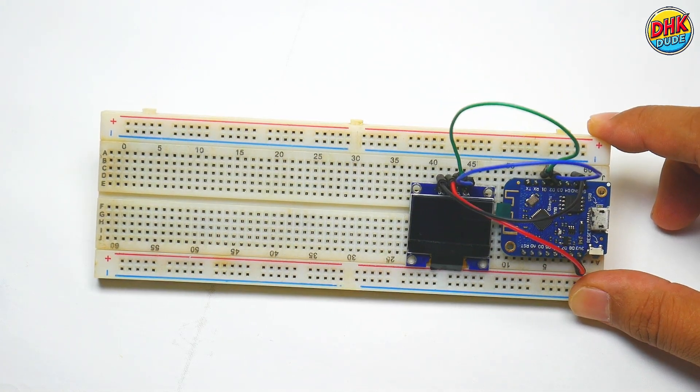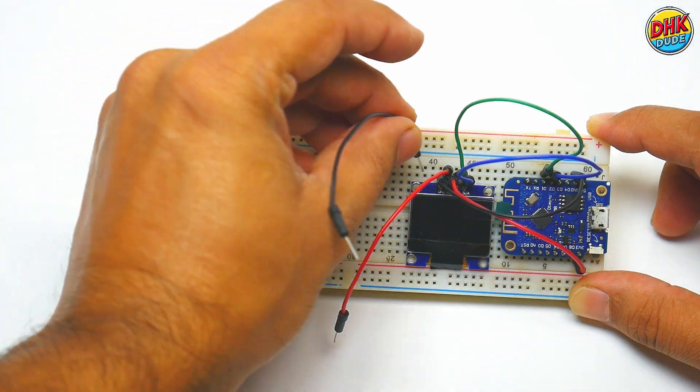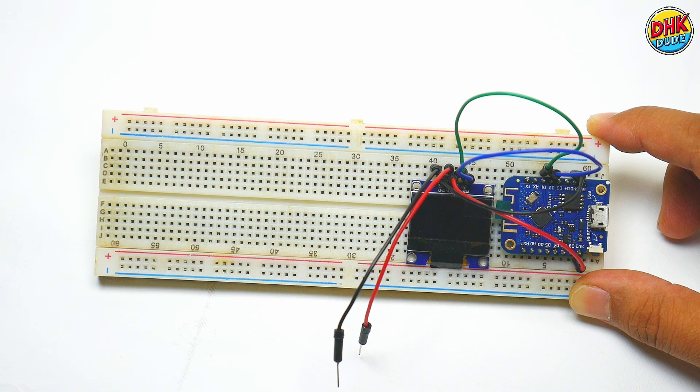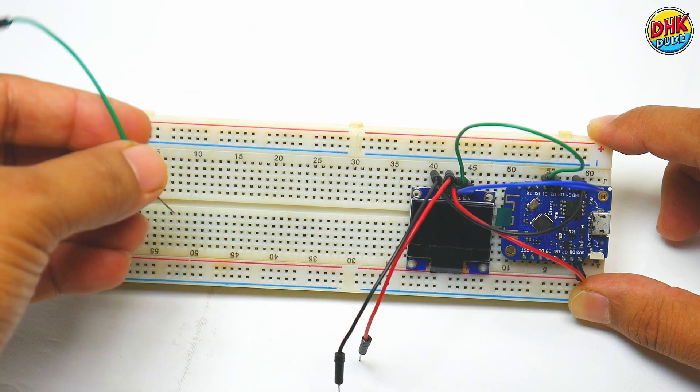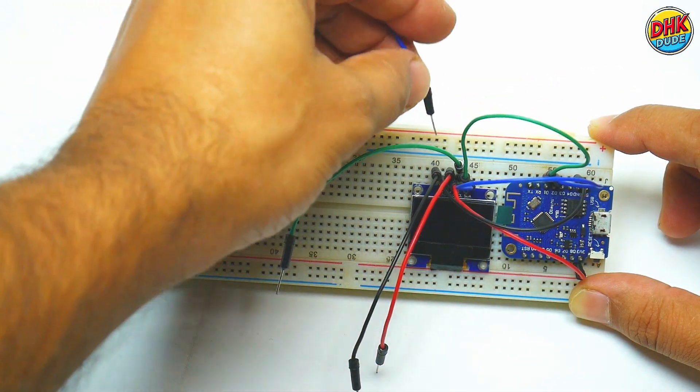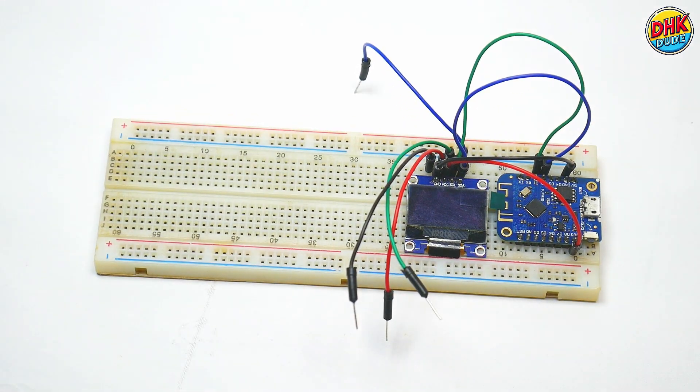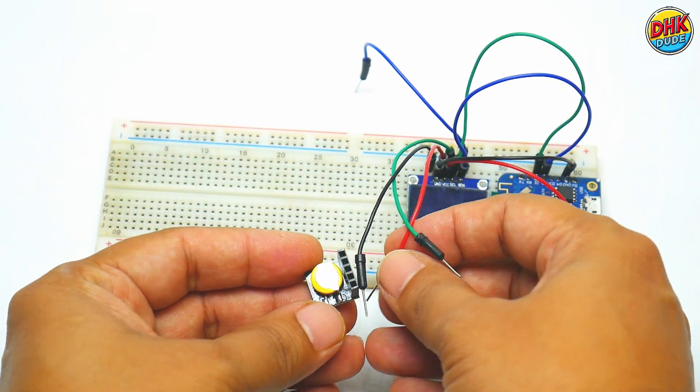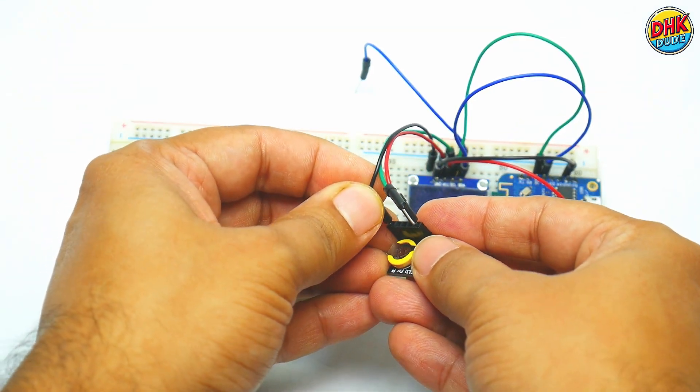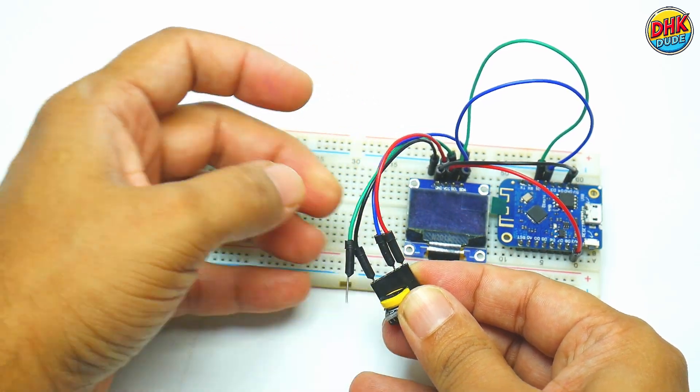Now we will connect DS3231 RTC module in parallel with OLED screen. Take red jumper wire and connect one end to VCC pin of the screen. Connect one end of the black jumper wire to GND pin. Take green jumper wire and connect to SDA pin of the screen. Take blue jumper wire and connect to SCL pin of the screen. Now it's time to connect RTC module in parallel with the screen. Connect VCC of the screen to positive pin of the module. Connect GND to GND pin of the module, SDA pin to SDA pin of the module and SCL pin to SCL pin of the module. Check wiring diagram for better understanding.